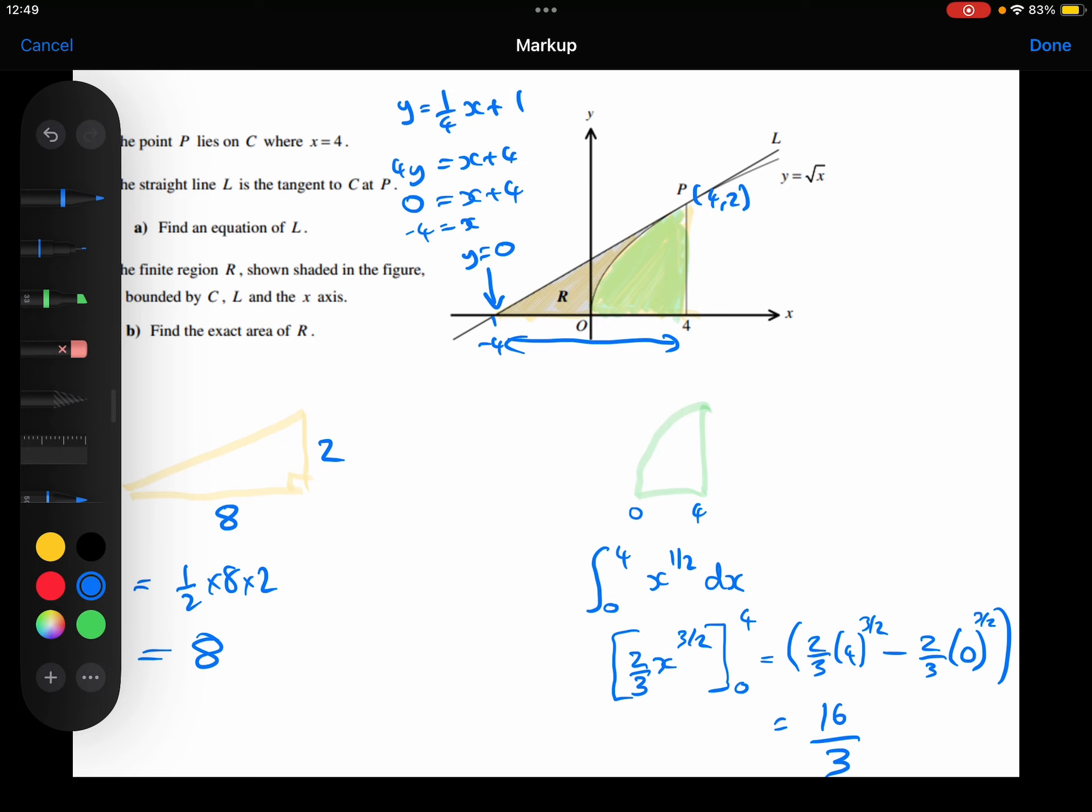So that's going to give me 16 over 3. Then, the shaded region R is the triangle take away the area under the curve. So the area of R is 8 minus 16/3, which equals 8/3.